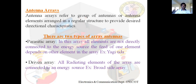The function of an antenna is to radiate energy in the form of electromagnetic radiation in the desired manner. When a single antenna is not sufficient to achieve the desired radiation characteristics, we need to group more antennas together.